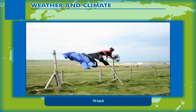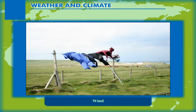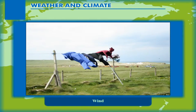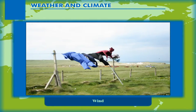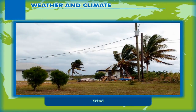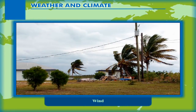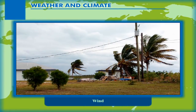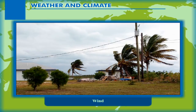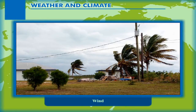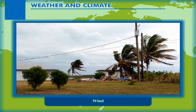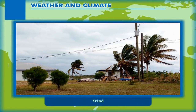The speed of wind depends on the pressure differences between two regions. When the difference is high, the wind rushes from the high pressure region to the low pressure region at a great speed, as in a storm.